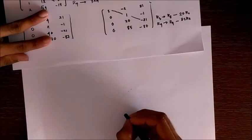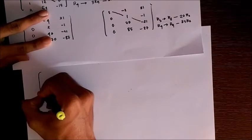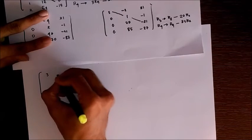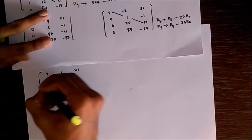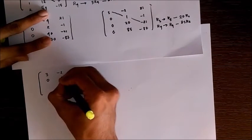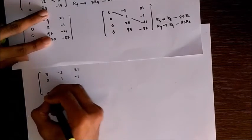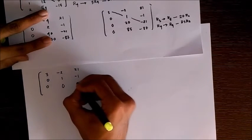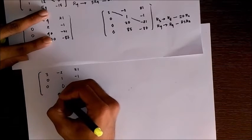After these transformations, we get a matrix: 3, minus 2, 21, 0, 1, minus 1, 0, 0, minus 1, and 0, 0, minus 2. So we now have 3, 1, and minus 1, and all elements under 3 and 1 are 0.